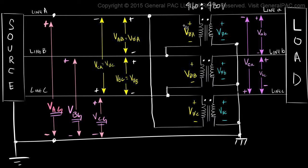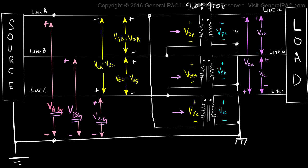Similarly, we have voltages that are measured across each individual winding. We have the high voltage winding and then we have the low voltage winding. So for winding A on the high voltage side, Vphase A measures the voltage across the polarity side of winding A and the nonpolarity side of winding A. Similarly, Vphase B measures the voltage across the polarity side of winding B and the nonpolarity side of winding B, and the same thing for Vphase C. Similarly, we are measuring the voltage across the polarity side of the low voltage winding A and the nonpolarity side of the low voltage winding A, and the same thing with winding B and winding C.